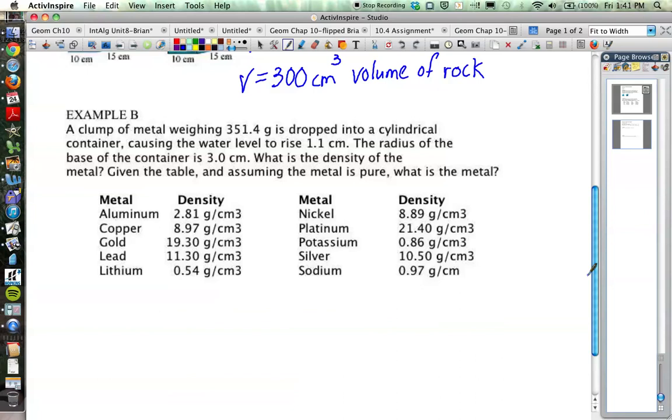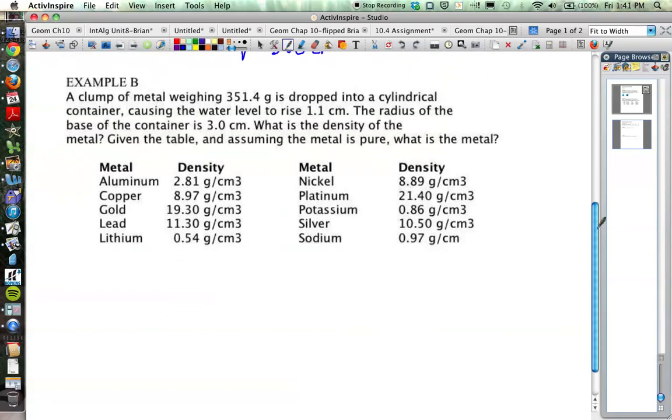This problem reminds me of the famous problem with Archimedes, the mathematician, and the gold crown. He was trying to figure out if the crown was made of pure gold because the goldsmith was trying to cheat the king. Archimedes figured out that the crown was not pure gold and that the goldsmith must have taken some and kept some for himself. We'll see a video in class related to Archimedes and the gold crown.